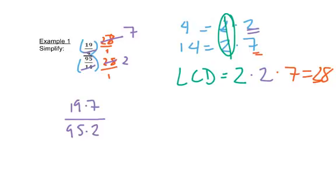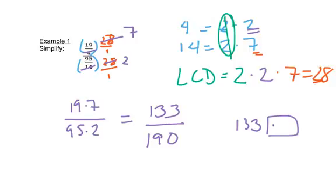On the bottom, 14 goes into 28 two times, which gets rid of the denominator on the bottom fraction, so on the bottom we just have 95 times 2. That gives us 133 on top and 190 on the bottom. You can check that in your calculator — enter 133, then the fraction button, then 190, and hit enter. If it gives you the same thing back, your fraction is already simplified.